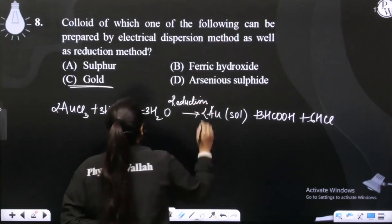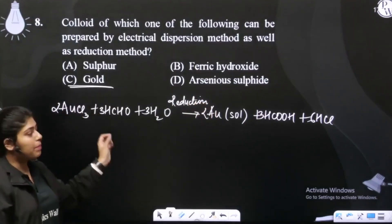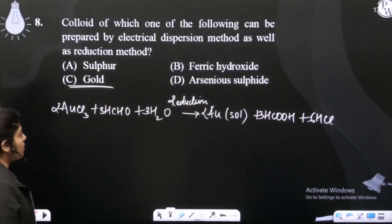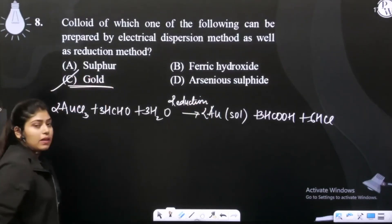So joh gold ka sol hai, usko ham reduction method se bhi prepare kar sakte hai and you can prepare by the electrical dispersion method. So option number C is the correct answer.